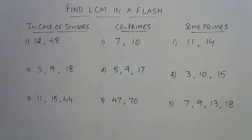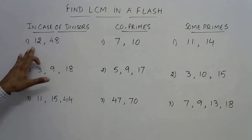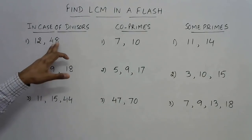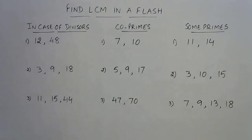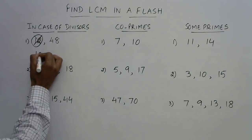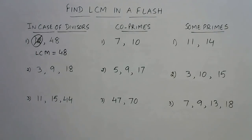In the case of divisors, the first question is 12 and 48. We all know that if you count the table of 12: 12 ones are 12, 12 twos are 24, 12 threes are 36, 12 fours are 48 — so 12 divides 48 exactly. In this case the smaller number, that is the divisor, is not to be considered, and the LCM will be the other number — that is, the multiple. So the LCM of 12 and 48 is 48 itself.